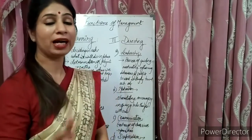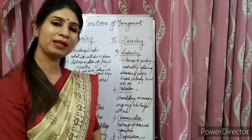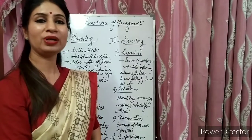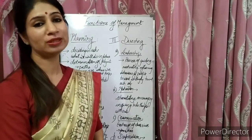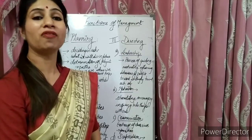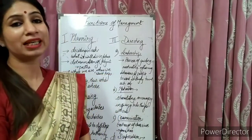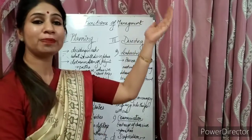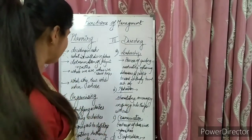Various departments are formed through departmentation and activities are delegated to them. Next is delegation of authority — without giving authority, no task can be performed by employees. Then fixing responsibilities: who is responsible for what work. Finally, establishing relationships — superior-subordinate relationships, defining who has to report to whom. This is the organizing function of management.